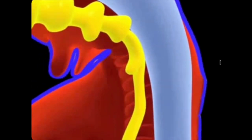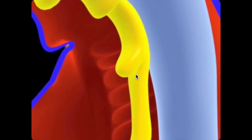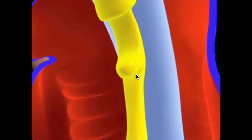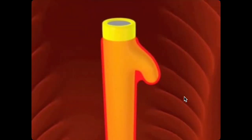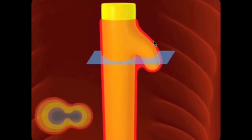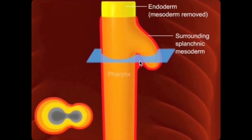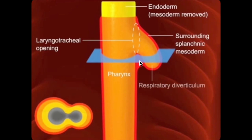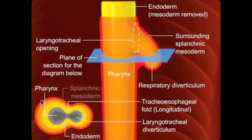The distal portion of the laryngotracheal diverticulum will give rise to the respiratory bud and eventually the respiratory tree. It is all surrounded by splanchnic mesoderm. What you're seeing now is the same structure shown in a sagittal view, and you're also given a transverse section — a bird's-eye view — of what's happening in real time.